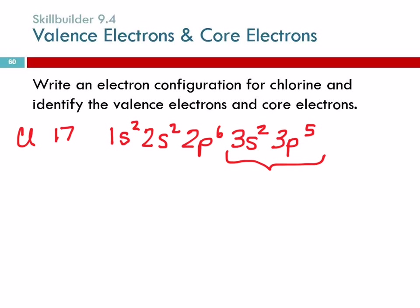7. 2 plus 5. There's 2 in the s room, there's 5 in the p room. So 7, and I call them VE, valence electrons.